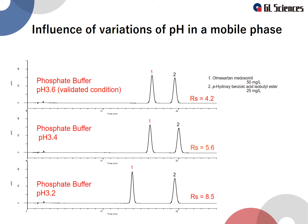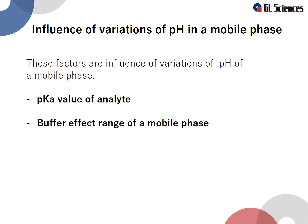It is important to confirm a new method using several different pH values. The pH of the mobile phase is influenced by the pKa value of the analyte as well as the effective buffer range. We will explain these two effects.